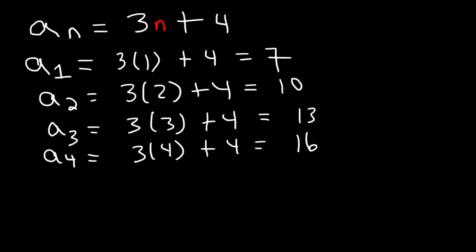So these are the first four terms of the sequence. So you can write it out like this if you want. The first term is 7, the next term is 10, the next one is 13, and then 16.